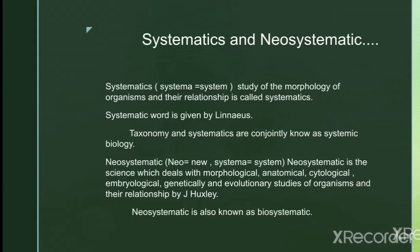According to Simpson, systematics is the scientific study of kinds and diversity of organisms and of any and all relationships among them. The next term is new systematics — 'neo' means new, 'systema' means system. New systematics is a science that deals with morphological, anatomical, cytological, embryological, genetical, evolutionary, paleontological, and geographical studies of organisms and their relationships.